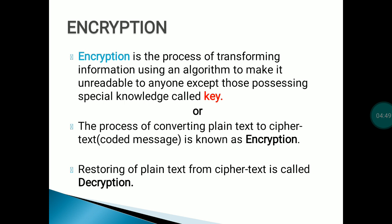Encryption is one of the techniques used in the process of cryptography. Encryption is the process of transforming information using an algorithm to make it unreadable to anyone except those possessing special knowledge called a key. The information is coded so that another person is not easily able to fetch it. Even if the person tries, they won't be able to get the actual message. Only the authorized person with the key can access the information in its original form.